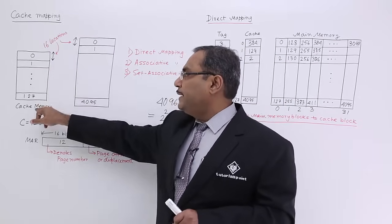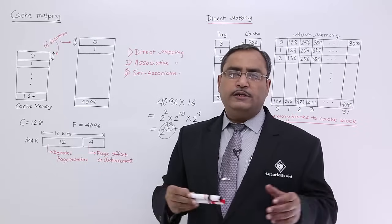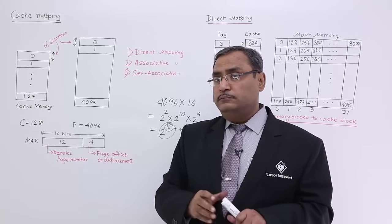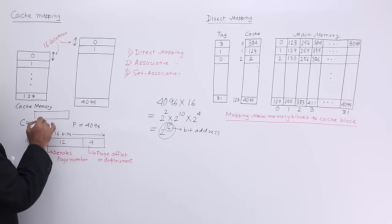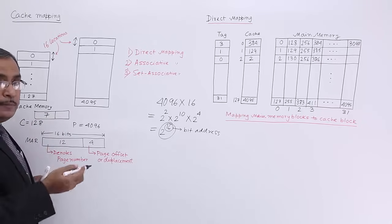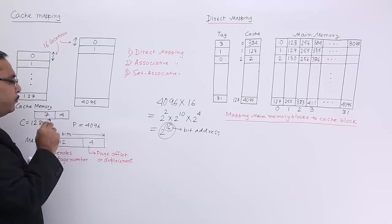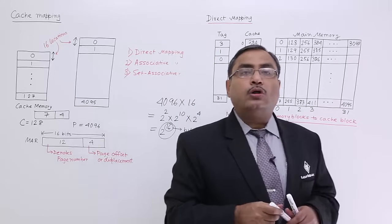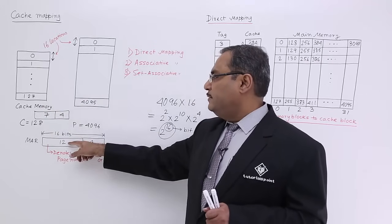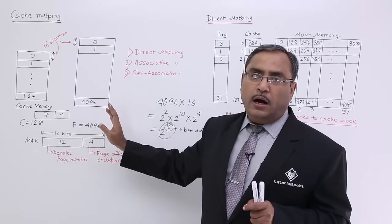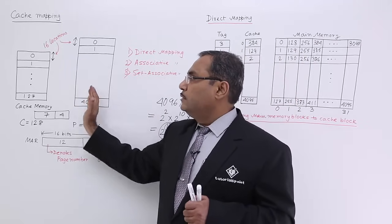The cache memory has 128 frames. Starting from frame number 0, the maximum frame number is 127. To denote the frame number, 7 bits are required because 7 bits give 128 combinations. Since page size equals frame size, we have 4 bits for the page offset or displacement. So cache memory address bits total 11, while main memory address bits are 16. C equals 128 frames and P equals 4096 pages in this example.